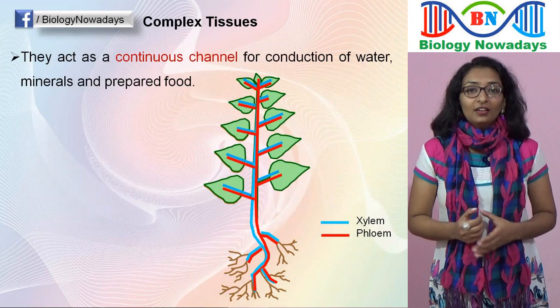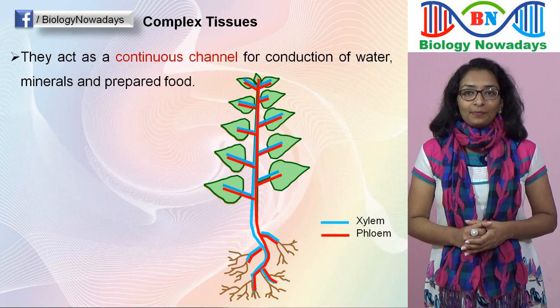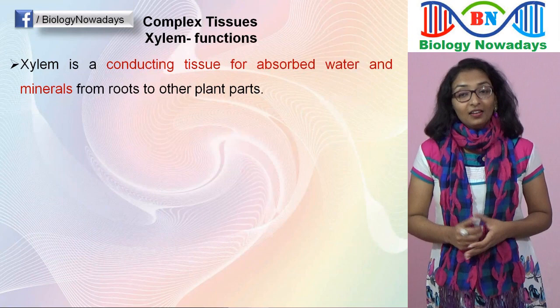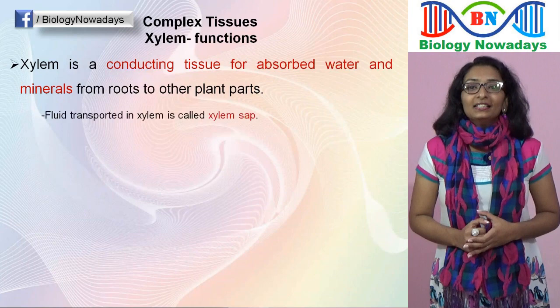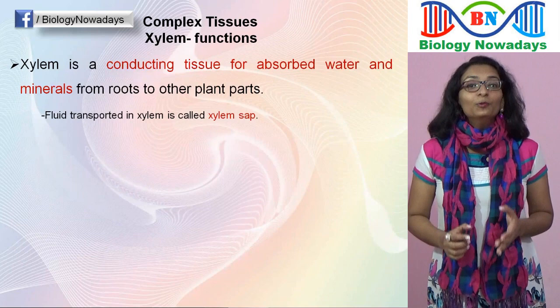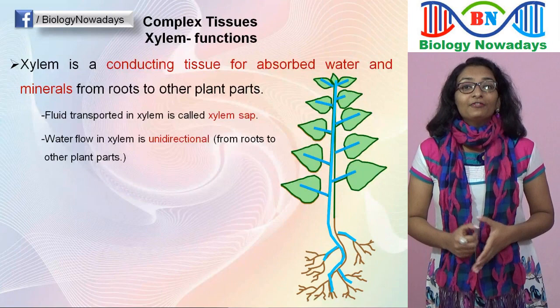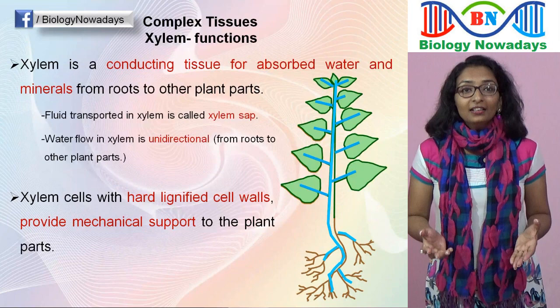In this video, we will discuss about xylem. Xylem functions as a conducting tissue for absorbed water and minerals from roots to other plant parts — in other words, they are the water pipes of the plant. The fluid transported in xylem is called xylem sap. Water flow in xylem is unidirectional, i.e., water flows only in one direction from roots to other plant parts. Most of the xylem cells have hard cell walls with deposition of lignin, and thus xylem also provides mechanical support to the plant parts.